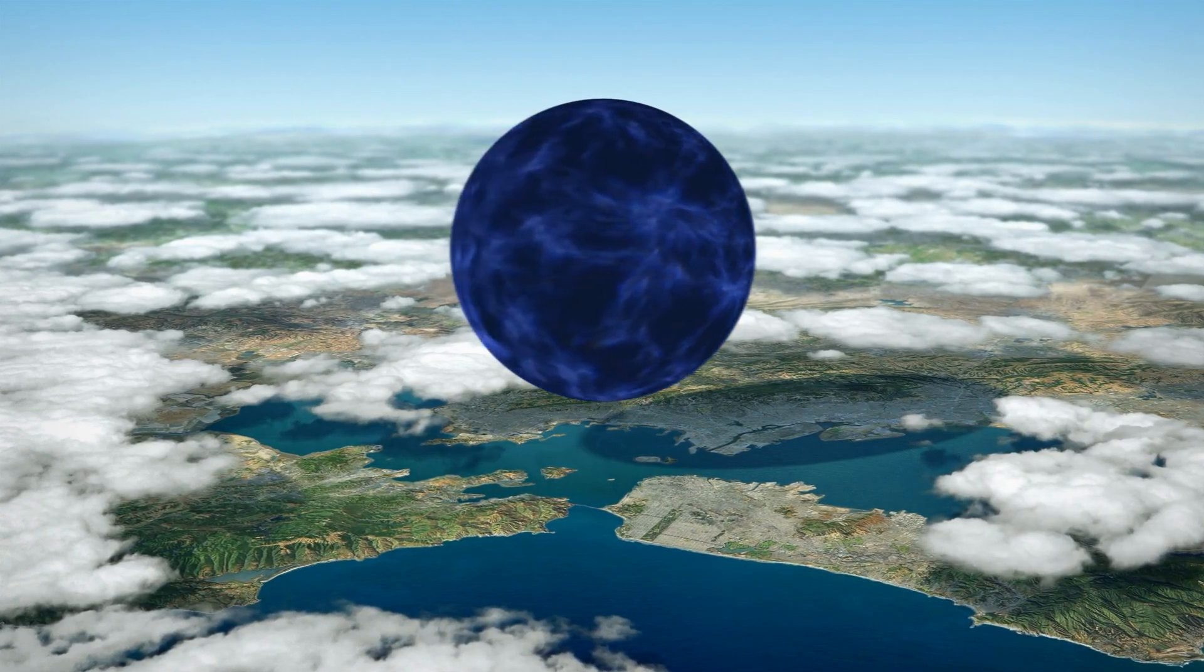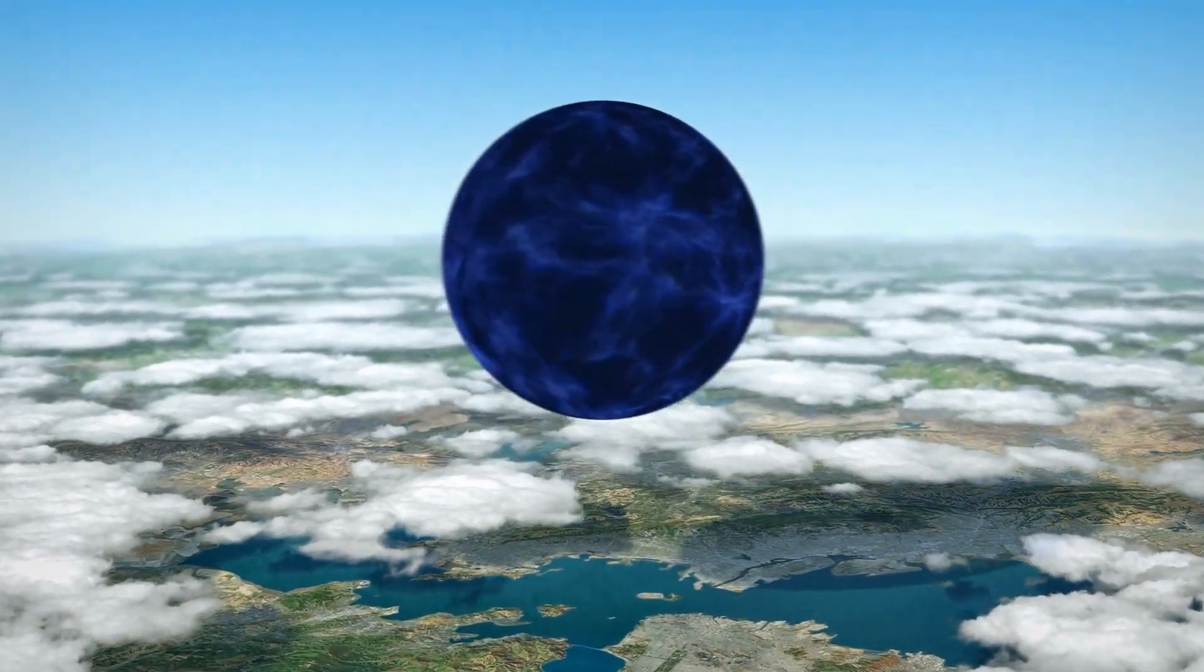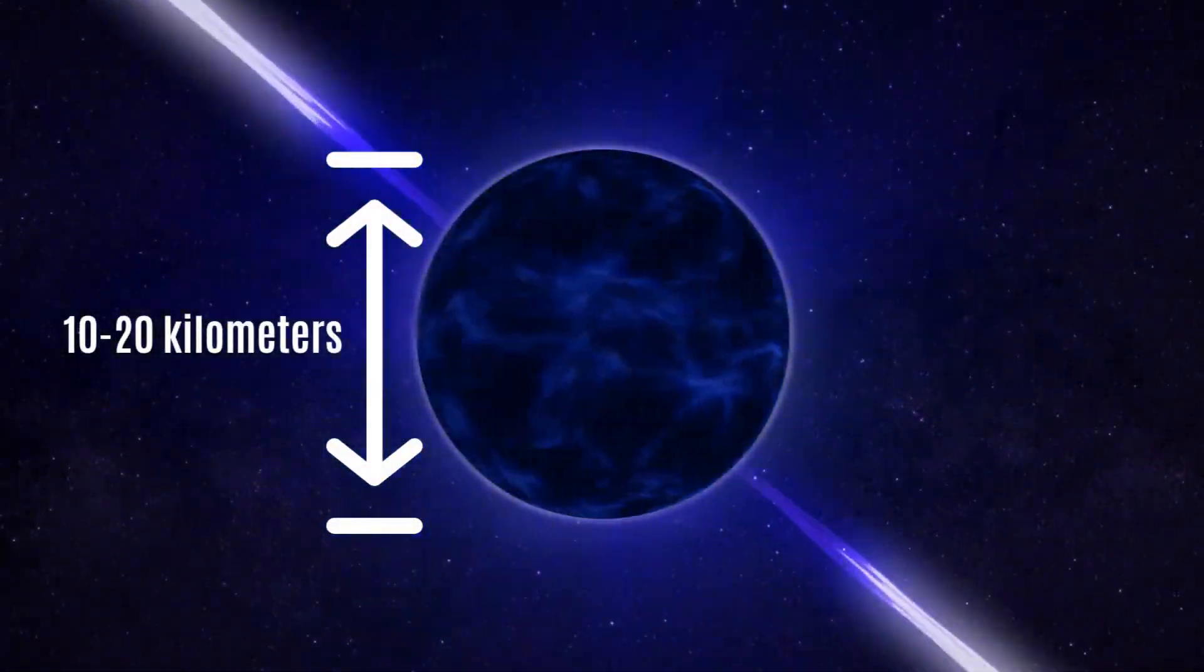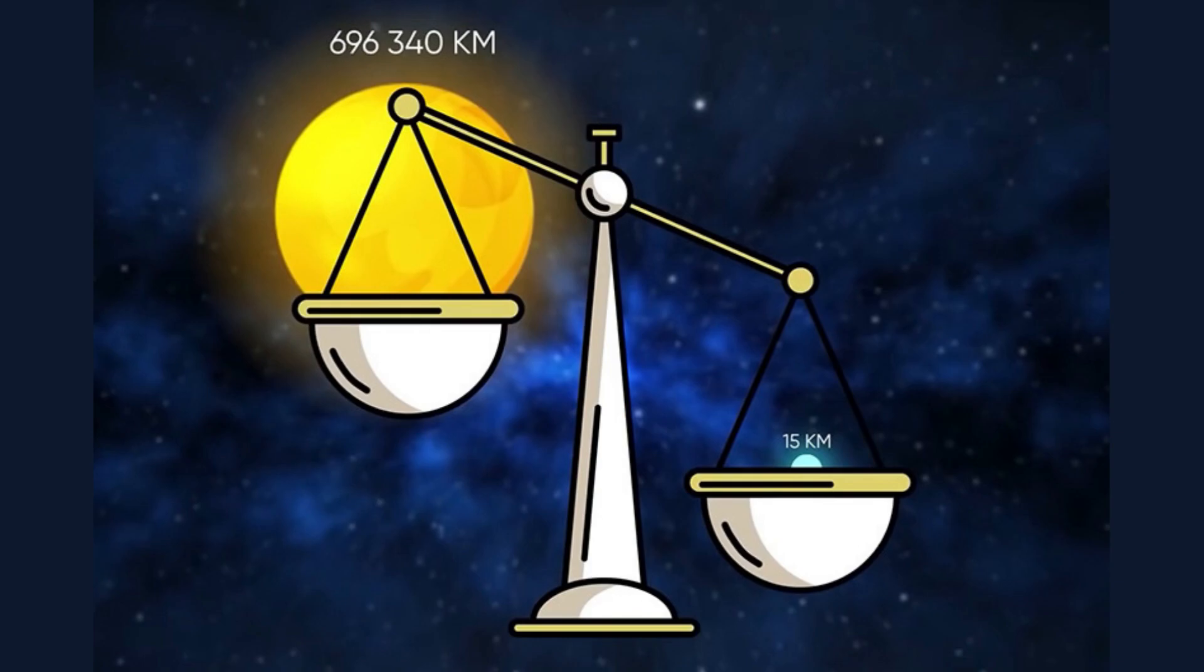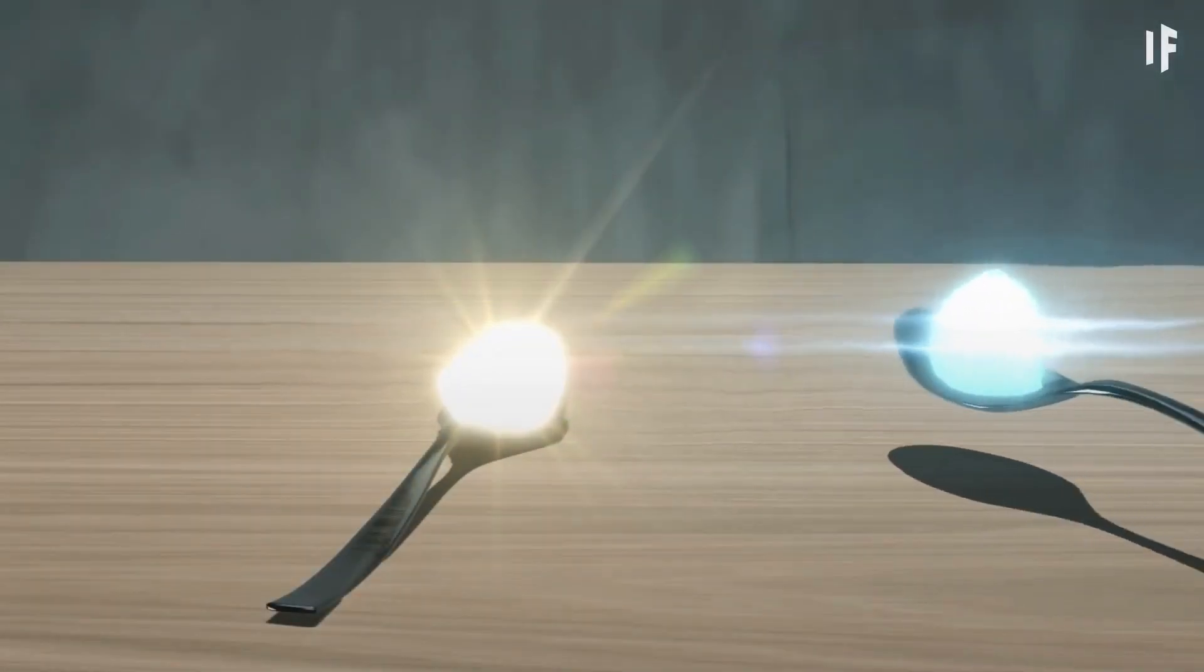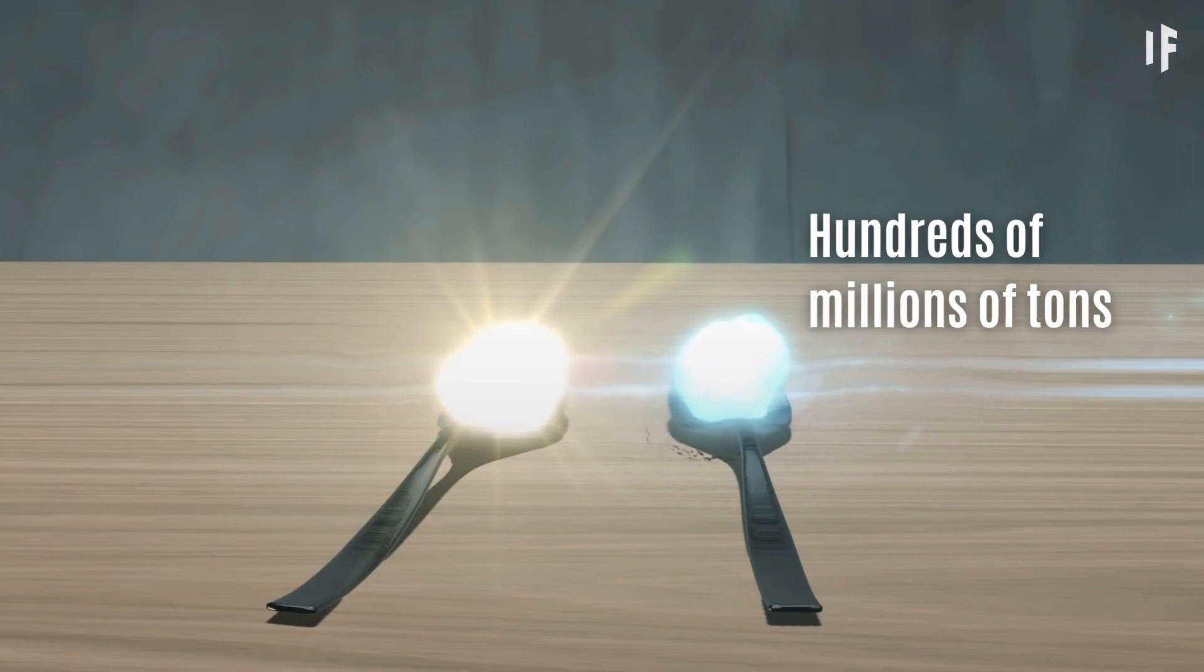Neutron stars are one of the densest objects in the universe. Their size is about 10 to 30 kilometers in diameter, but they are more massive than our Sun. Density is so extreme that a teaspoon of their material would weigh hundreds of millions of tons.